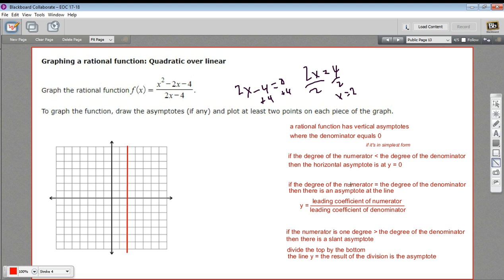So when the degree of the numerator equals the degree of the denominator, you have an asymptote that you figure out by putting the coefficients over each other. But that's not the case. And if the numerator is 1 degree greater than the degree of the denominator, that's our case. 2 is 1 greater than 1. Then we actually have to do some polynomial long division. We have to divide this top by the bottom. What we get for a result is the equation of the line that is the slant asymptote.